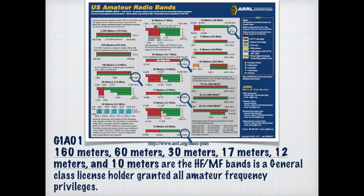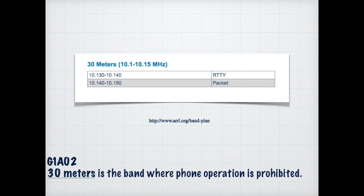I encourage you to download the ARRL band plan from their website — it's in PDF form. It will show you that 160, 80, 30, 17, 12, and 10 meters are frequencies where a General Class license holder has full privilege. Looking at the ARRL webpage for the band plan also shows different information. For example, on 30 meters, phone operation is actually prohibited — RTTY and packet is basically all that's permitted on the 30 meter band.